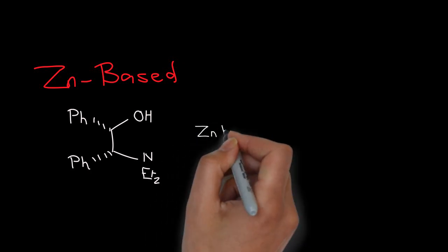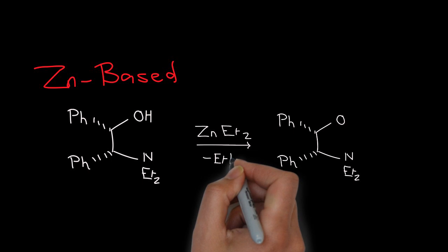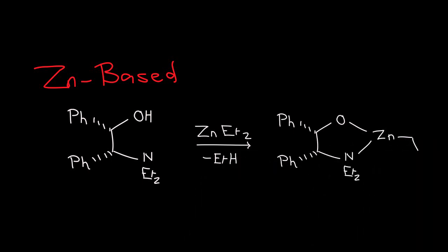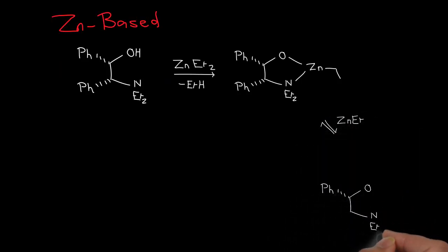Formation of the catalyst is by chelation of the amino-alcohol with zinc and loss of ethane in this particular case. Coordination of another molecule of diethylzinc sets up a nucleophilic zinc ethyl center.